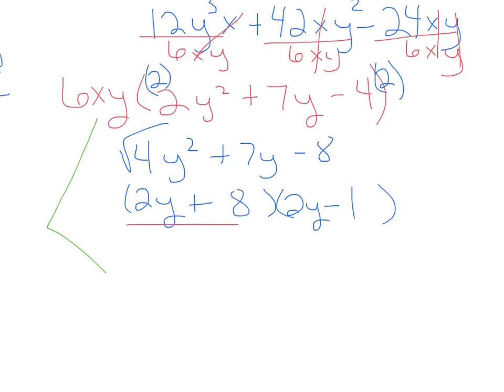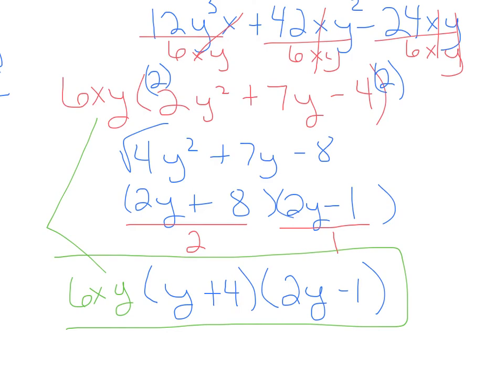And then we divide by the GCF. The GCF here is 2. The GCF over here is 1. These always multiply to make that number that you multiplied with at the top. So 2 times 1 is 2. Divide both of these by 2. When you divide these by 1, it's not going to change. We have y plus 4, 2y minus 1. And our GCF from up here needs to come down here. So 6xy. And we're done.